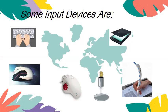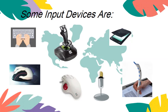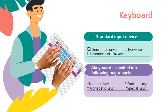Some input devices are keyboard, mouse, joystick, scanner, trackboard, and microphone. The devices used to enter data and instructions into a computer are called input devices. Keyboard is the most standard input device. It is similar to the typewriter. Keyboard has 104 keys and is divided into the following major parts: number keys, alphabetic keys, function keys, and special keys. As you press a key on a keyboard, a character appears on the monitor screen.